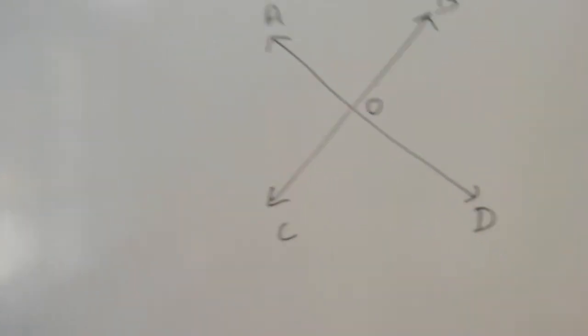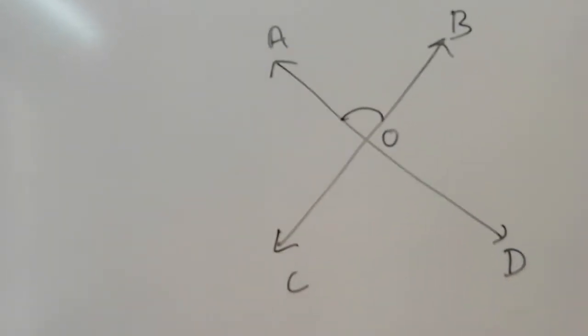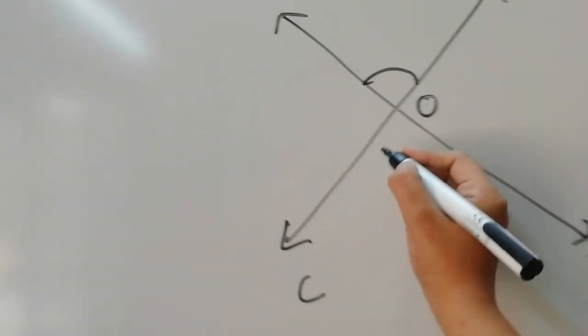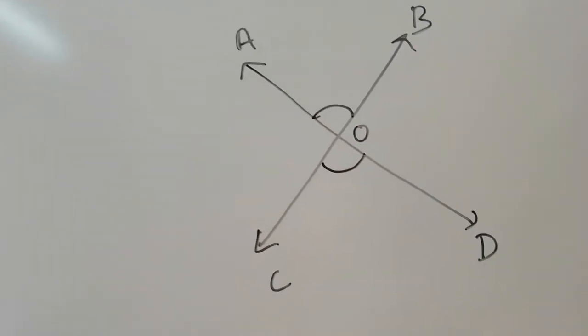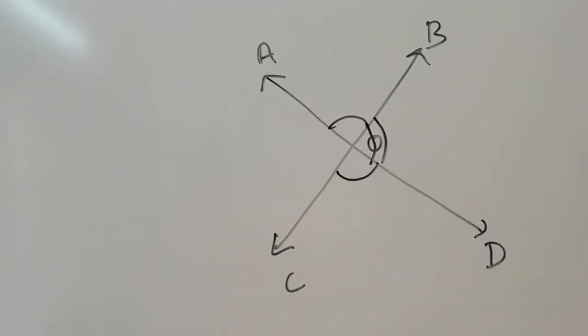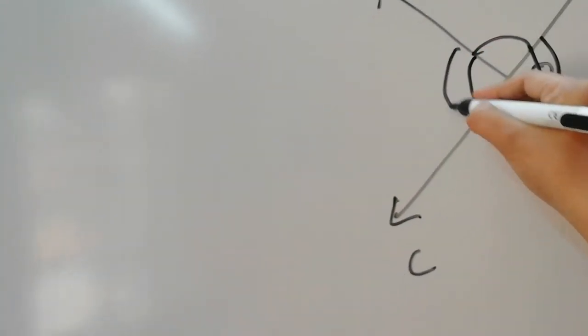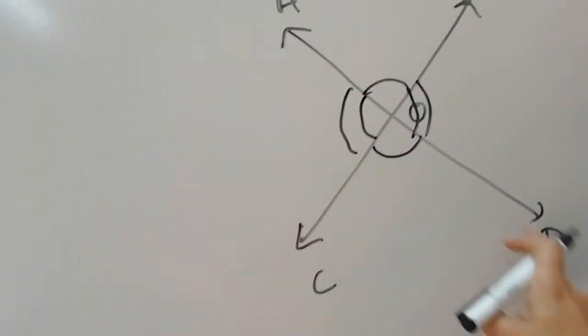Now there is another type called vertically opposite angles. When I ask what angle is vertically opposite to angle AOB, the answer is angle COD. Angle COD is vertically opposite to angle AOB. And the angle opposite to angle BOD is angle AOC.